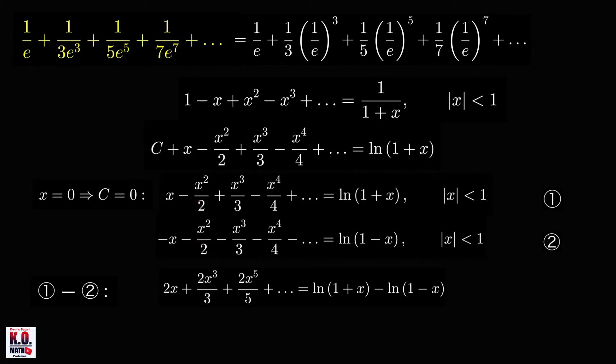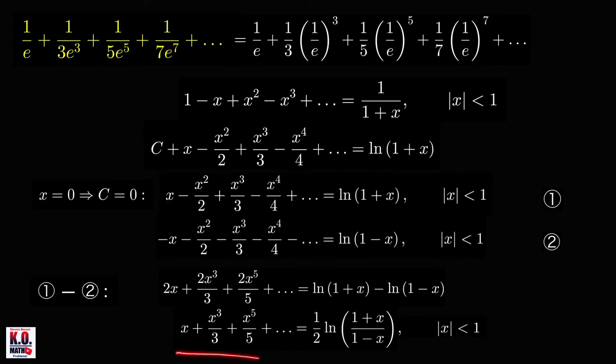So you have 2x plus 2x cubed over 3 plus 2x raised to 5 over 5 plus and so on equal to this difference. And dividing both sides of this equation by 2, we'll get the following. And of course, using property of ln, this difference of ln is just equal to ln of this quotient. And this new equation here is of course valid for absolute value of x less than 1.